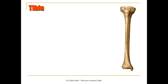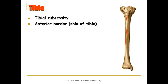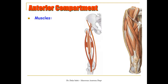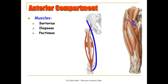For the right tibia, note the tibial tuberosity, from which extends the anterior border or shin of the tibia. The medial surface ends below at the medial malleolus. The anterior compartment muscles: start first with the sartorius, which is a long oblique muscle that divides the anterior compartment into upper medial and lower lateral parts. The upper medial part contains the iliopsoas and the pectineus.